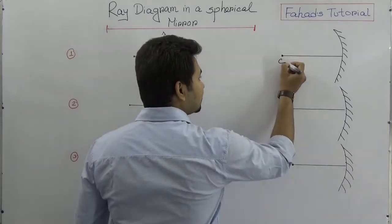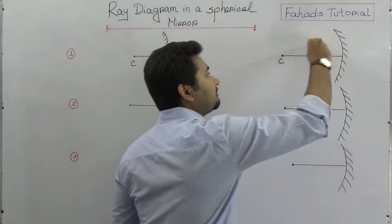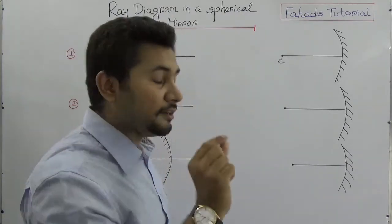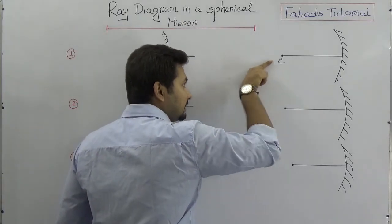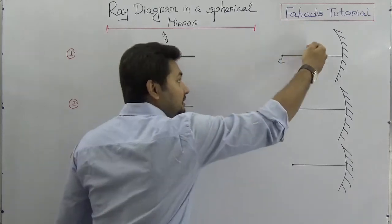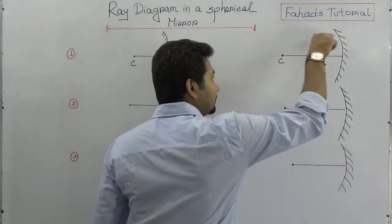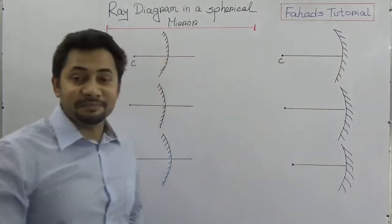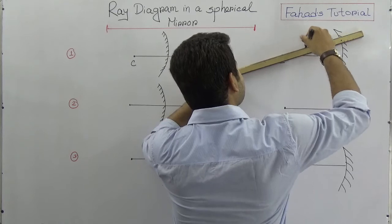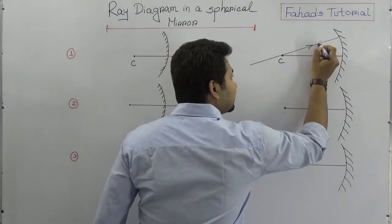The first ray is: we know this is the center of curvature. In a concave mirror, the reflected side is on this side. The first ray diagram shows that if any light ray passes through the center of curvature C and strikes the mirror, after reflection it will come back along the same path. In the case of a concave mirror, if light falls into the mirror directed through C, after reflection it will maintain the same direction.